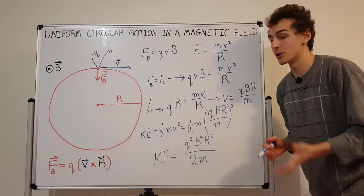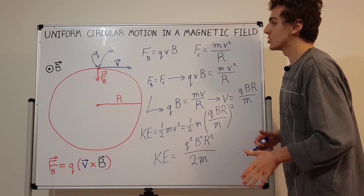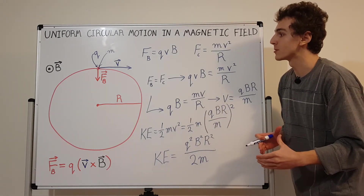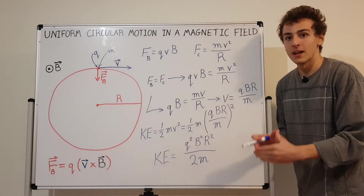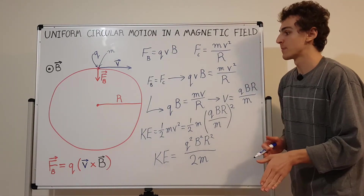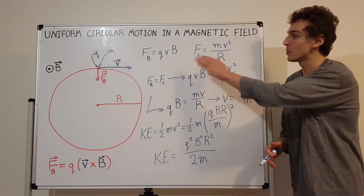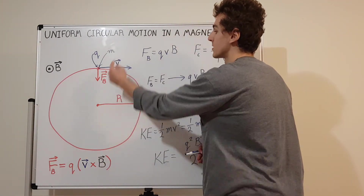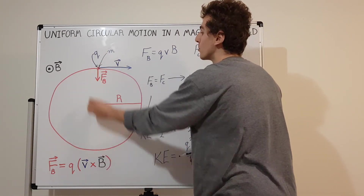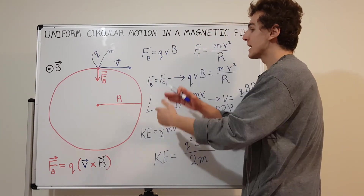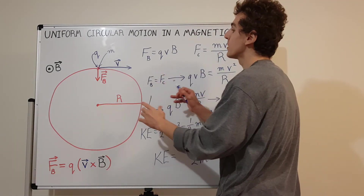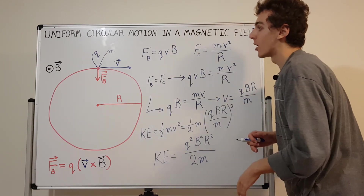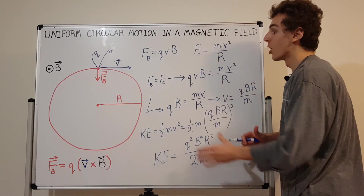Why would this kind of system be useful? In particle accelerators, this is one of the mechanisms of trapping particles and keeping them in one place. One notable type is the cyclotron, which uses this perpendicular magnetic field to trap particles in a circular trajectory. It's made of two D shapes — two halves — with a region inside where particles can be accelerated. They keep accelerating the particles and adjusting the magnetic field strength to keep them trapped, and eventually release them at really high kinetic energies.